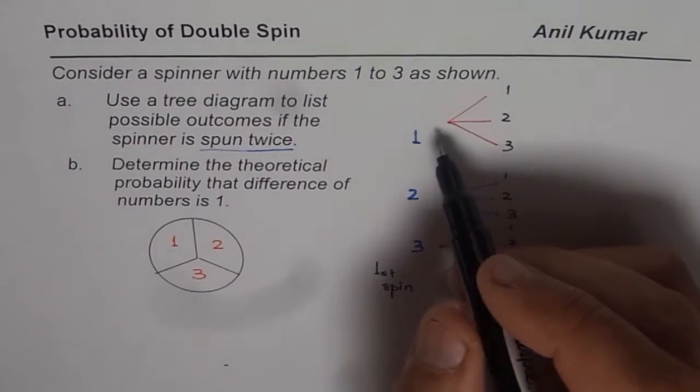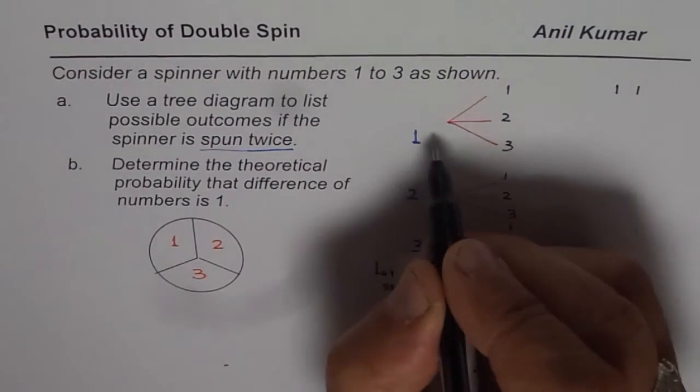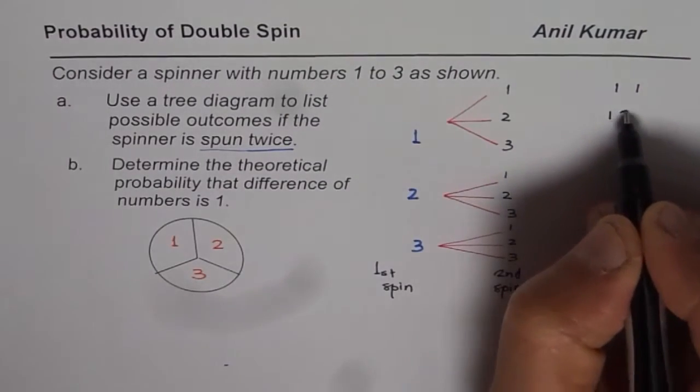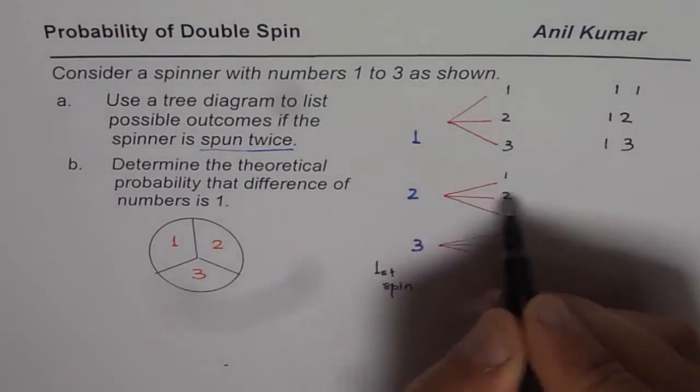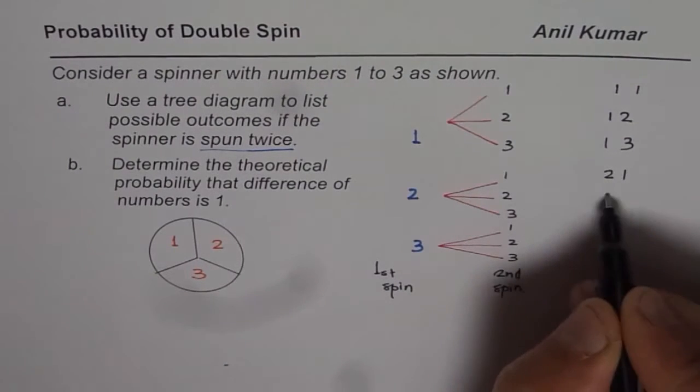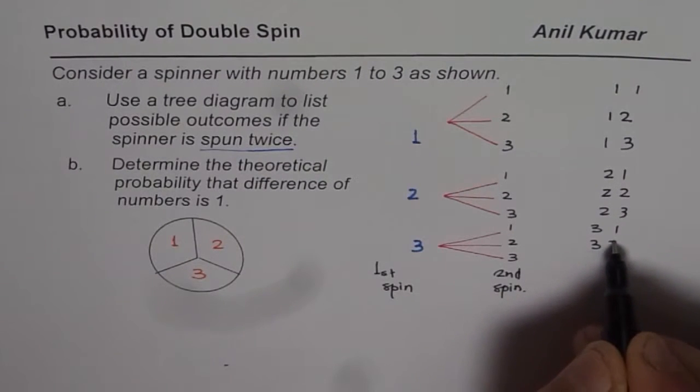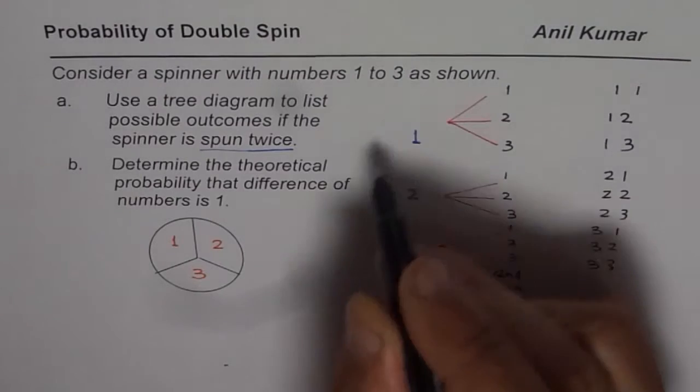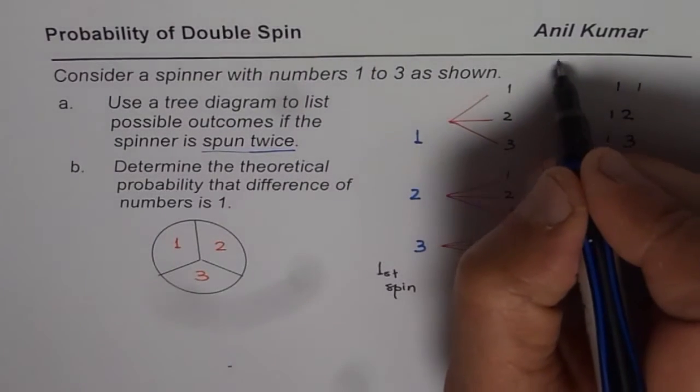Now combining these outcomes from the two spins, outcomes could be 1,1, let me write here. 1,1, or 1,2, 1,2 or 1,3 or 2,1, 2,2, 2,3 or 3,1, 3,2 or 3,3. So the tree diagram shows all possible outcomes. So these are possible outcomes.